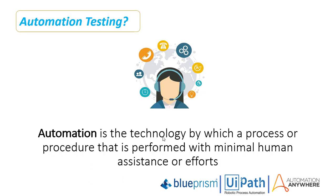What is IT automation? IT automation is the use of software to create repeatable instructions and processes to replace or reduce human interaction with IT systems. Automation software works within the confines of those instructions, tools, and frameworks to carry out tasks with little to no human intervention.